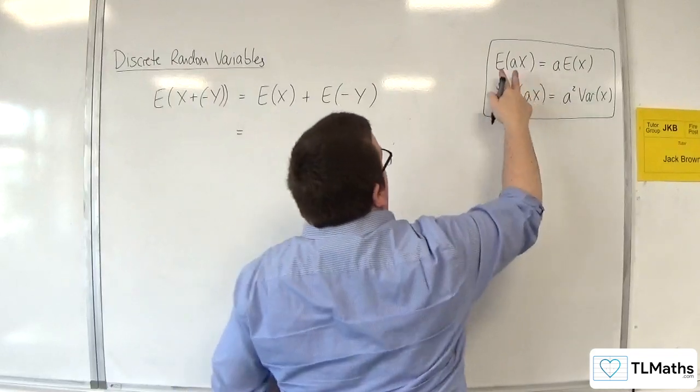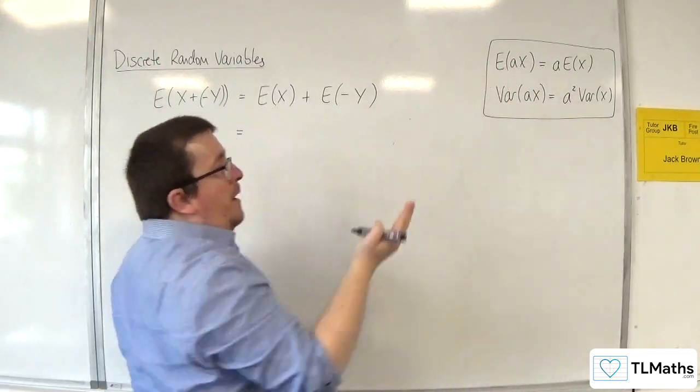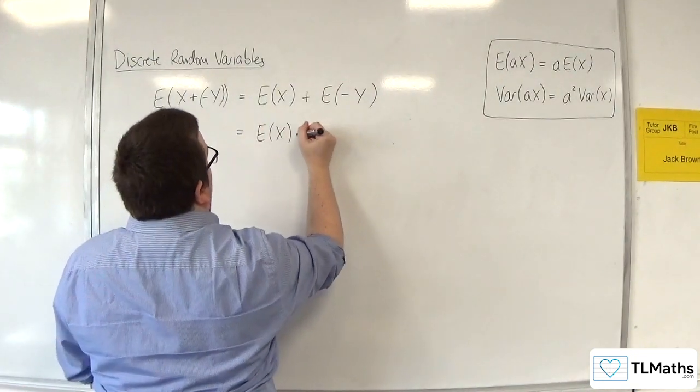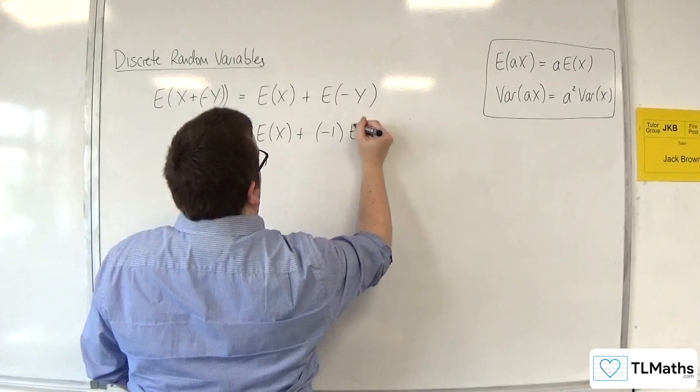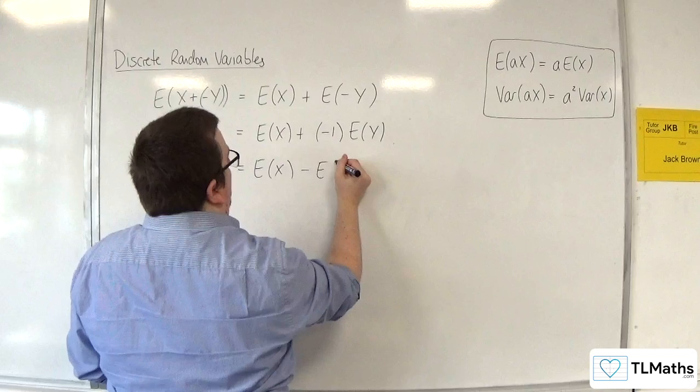Now, from this fact up here, the minus in front of the Y is essentially a is minus 1. So I can write that as E of X plus minus 1 times E of Y. So that's E of X take away E of Y.